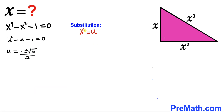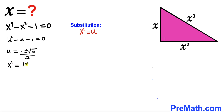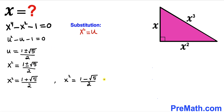Recalling that u equals x squared, we replace u with x squared. After back-substitution, x squared equals (1 plus square root of 5) divided by 2 for the first solution, and x squared equals (1 minus square root of 5) divided by 2 for the second solution with the negative sign.